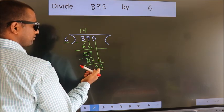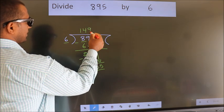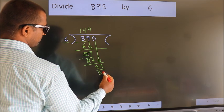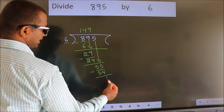A number close to 55 in the 6 table is 6 times 9 equals 54. Now we subtract. We get 1.